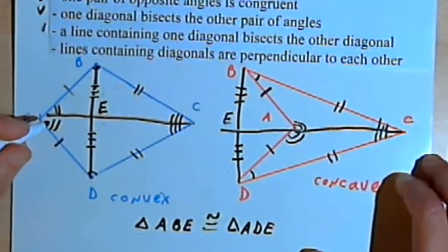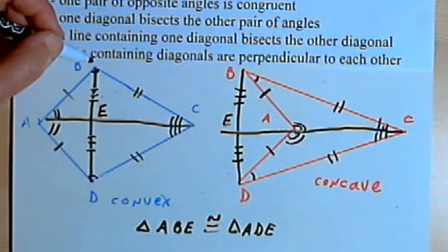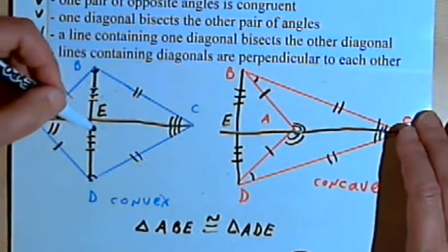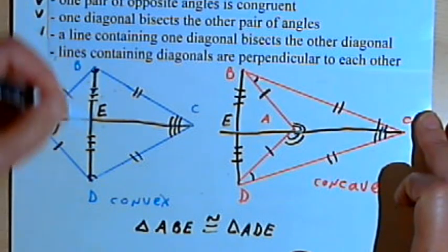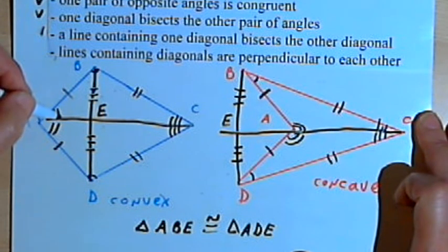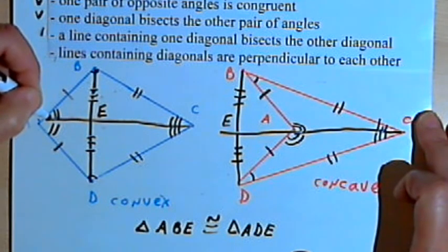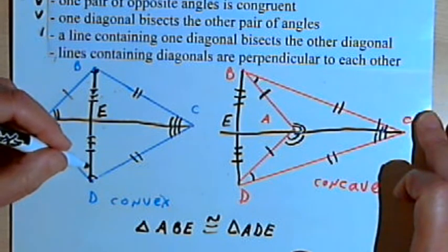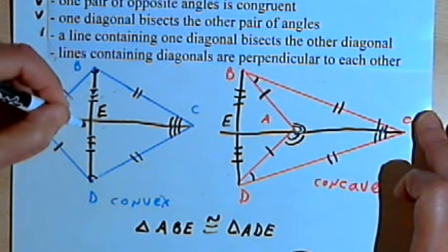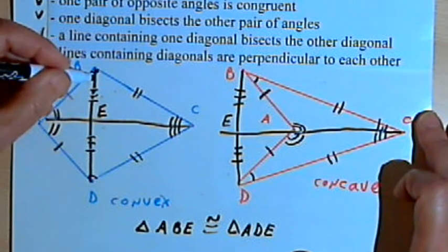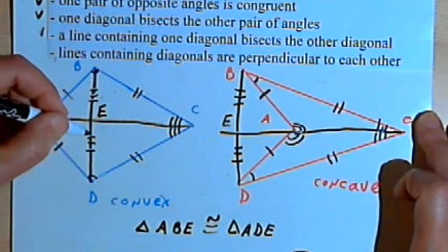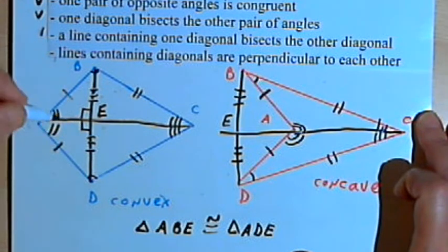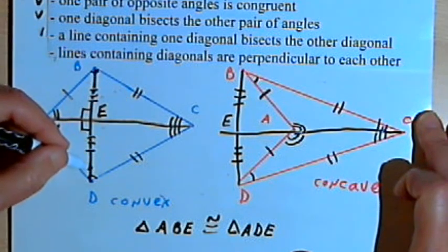And the last thing we've got to show is that lines containing diagonals are perpendicular to each other. So in other words, for the convex kite, I want to show that those two diagonals are perpendicular to each other. Well, angle AEB is congruent with angle AED. Both of those angles share a common side and fall along a straight line. They form a 180-degree angle, so they must both be right angles. So therefore these two diagonals are going to be perpendicular.